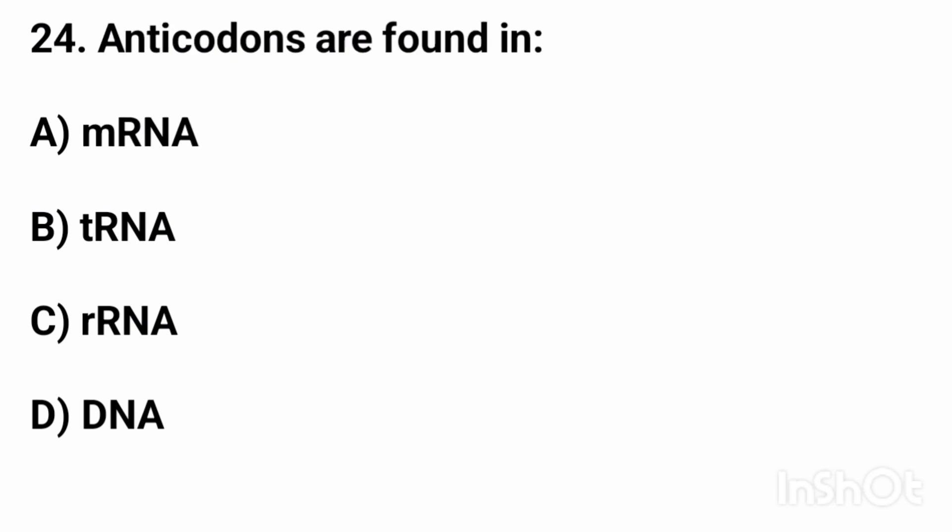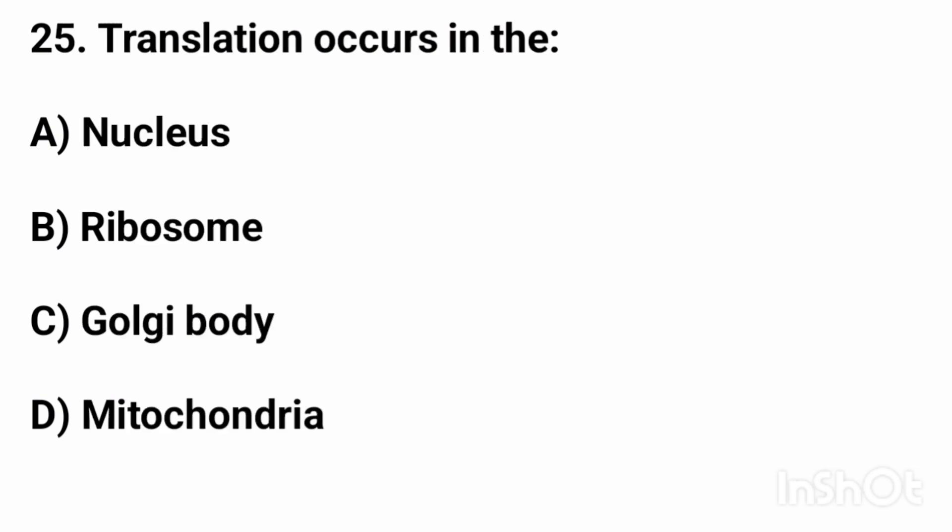Question number twenty-four: anticodons are found in? The right answer is option B, tRNA. Question number twenty-five: translation occurs in? The right answer is option B, the ribosome.